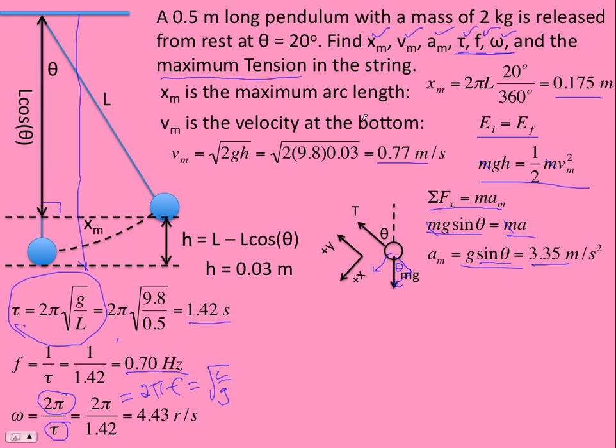If you know the equations, those are not too bad. How about maximum tension? That goes back to circular motion. We talked about rope swings. At the bottom, the rope has two jobs. It has to support the weight of the pendulum, and it needs a force upward to make it turn.